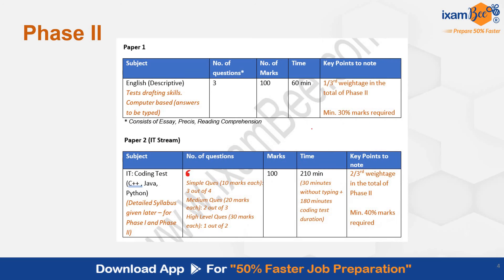In paper 2 you will have to attempt 6 questions. There are 4 questions of 10 marks each, out of which you have to attempt 3. There are 3 questions of 20 marks each — medium level questions — out of which you have to attempt 2. So that is 3 simple, 2 medium, and 1 high-level question.